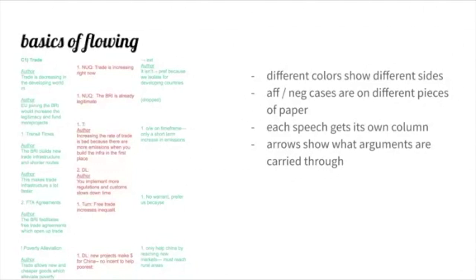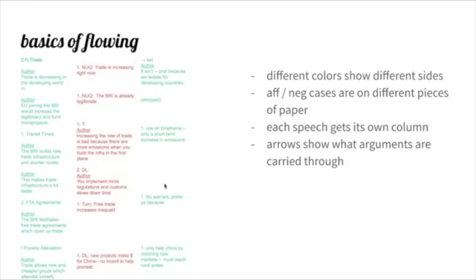Here's a rundown of the basics of flowing. This is a sample affirmative constructive, negative rebuttal, affirmative summary on the Belt and Road topic. These are all pretty stock arguments. There are different colors to differentiate each side. The neg case would be on a different piece of paper. Each speech gets its own column. Arrows for things like extension show it's being pulled through. I give each piece of evidence its own little paragraph — I write down the author's name, underline it, and write a brief description of what that author says. And if my opponents read two links, like transit times and free trade agreements, those would be separate areas. The reason I do that is so I can restart my numbering — so it's clear that a turn only responds to the free trade agreements argument and not the transit times argument.